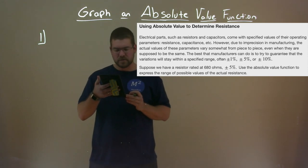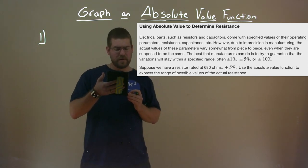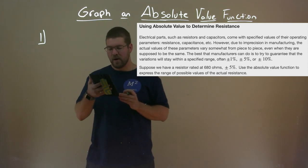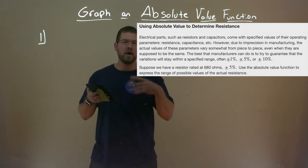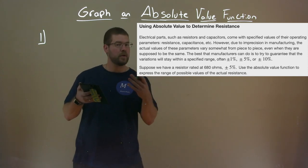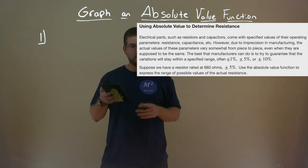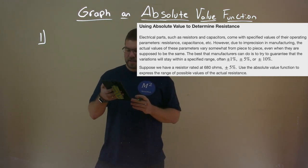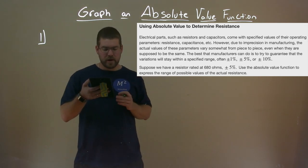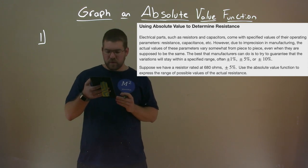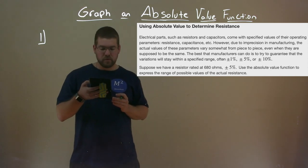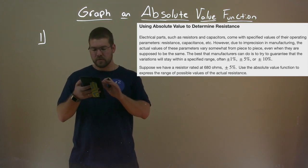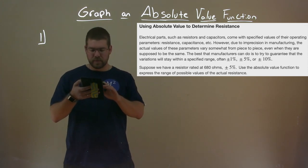The best that manufacturers can do is to try to guarantee that the variations will stay within a specific range, often plus or minus 1%, plus or minus 5%, or plus or minus 10%. Suppose we have a resistor rated at 680 ohms, plus or minus 5%. Use the absolute value function to express the range of possible values of the actual resistance.